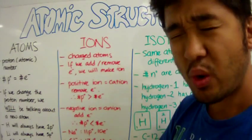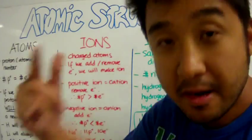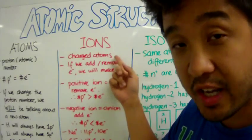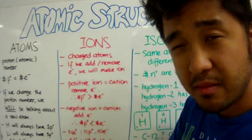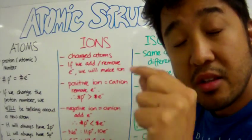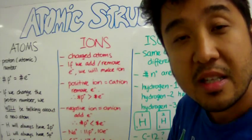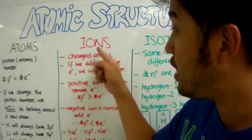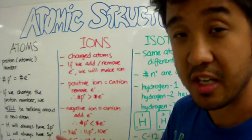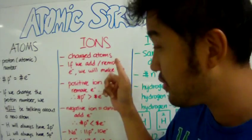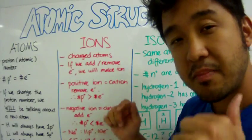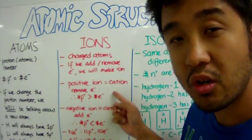So, when we add or remove electrons to an atom, we are making what we call a charged atom. A charged atom happens when we add or remove electrons, and that charged atom is now called an ion. An ion is simply a charged atom. There are two types of ions. There's a positive ion, also called a cation.